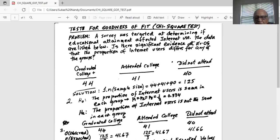So the total sample size is 44 plus 41 plus 40 is equal to 125. Our null hypothesis is the proportion of internet users is same in each group or each category. P1 equal to P2 equal to P3 is equal to 1 over 3. Why three? Because there are three categories which is 0.334.